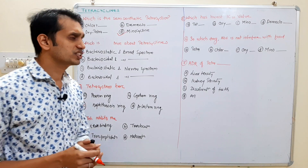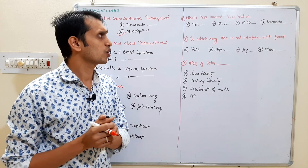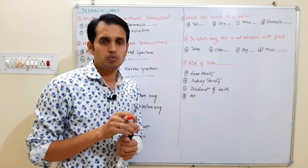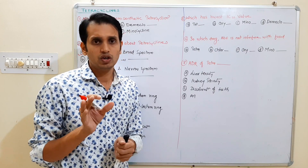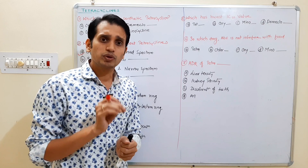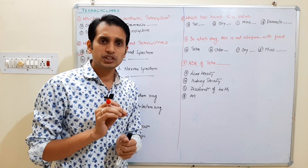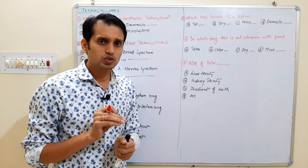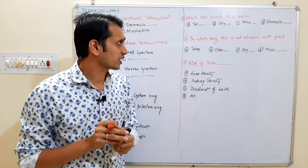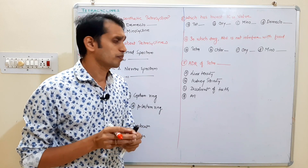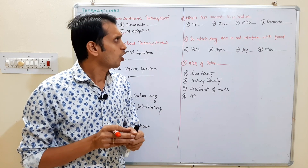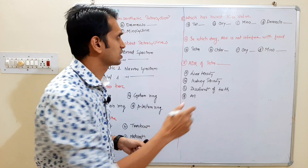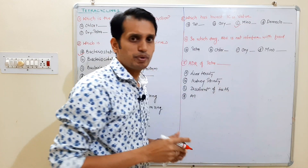Question 5: Which drug has the lowest IC50 value? The lower the IC50, the more potent the drug — meaning which dose kills 50% of the bacterial population. Option A: tetracycline, Option B: oxytetracycline, Option C: minocycline, Option D: not specified. The answer is C — minocycline has the best potency compared to the other drugs.